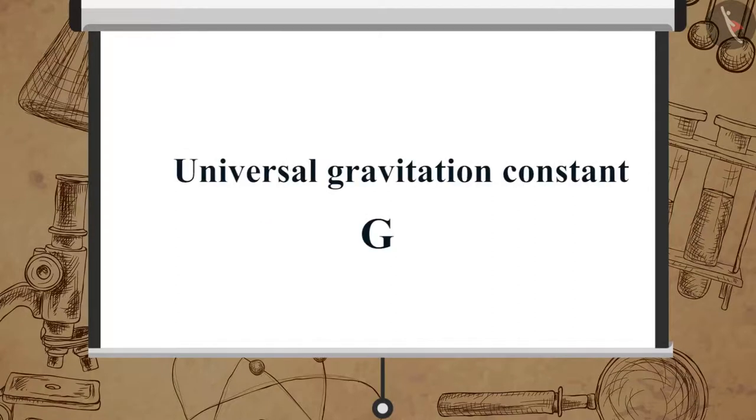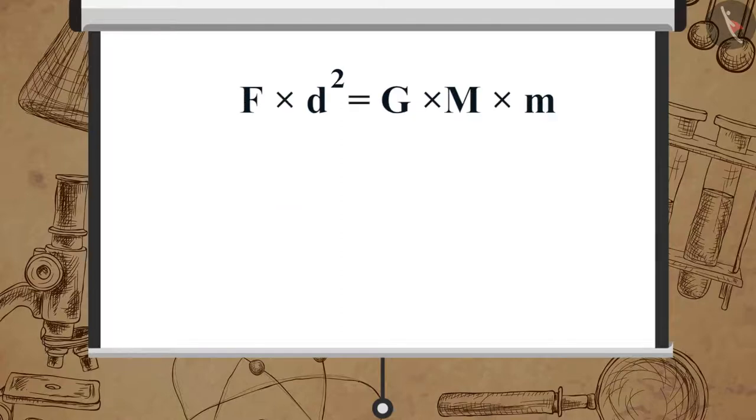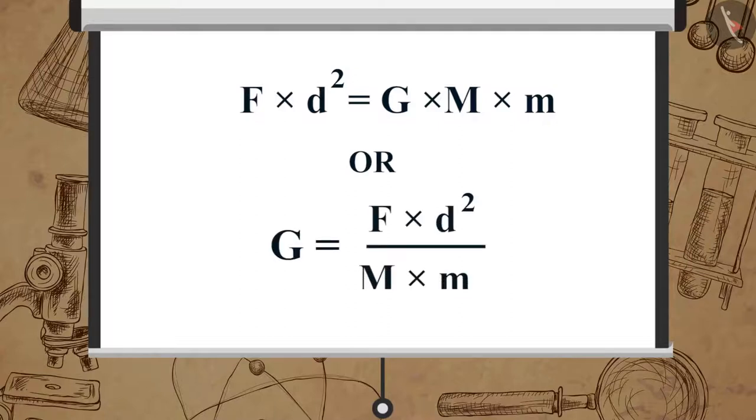Now let's see the mathematical formula for universal gravitation constant G. From this equation we get F multiplied by d square is equal to G multiplied by M multiplied by m, or G is equal to F multiplied by d square upon M multiplied by m.